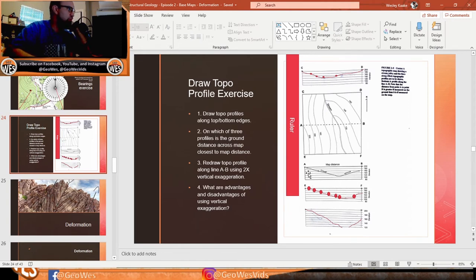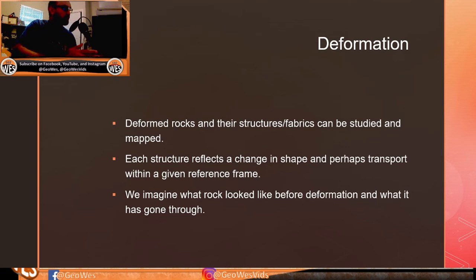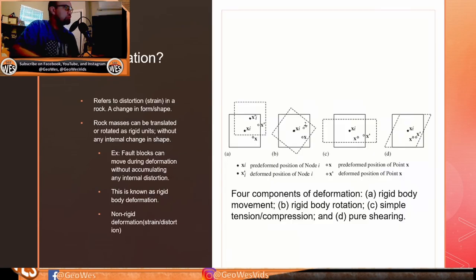Now moving into deformation. Deformed rocks and their structures or fabrics can be studied and mapped; each structure reflects a change in shape and perhaps transport within a given reference frame. Deformation refers to the distortion or strain in a rock — a change in form or shape. Rock masses can be translated or rotated as rigid units without any internal change in shape, such as a fault block moving without internal distortion — this is known as rigid body deformation. Non-rigid deformation involves strain or internal shape change.